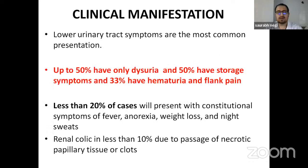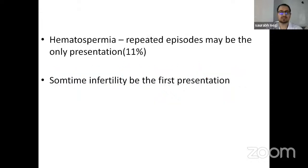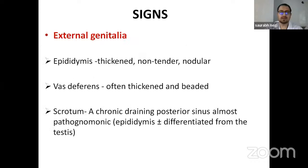In clinical manifestations, patients generally present with lower urinary tract symptoms. Up to 50% of cases have only dysuria, 50% have storage symptoms, and 33% have hematuria and flank pain. Less than 20% will present with constitutional symptoms like fever, anorexia, weight loss, and night sweats. Renal colic in less than 10% is due to passage of necrotic papillary tissue or clots. Hematospermia is present in 11% of cases, and sometimes infertility can be the only first presentation. On external examination, the epididymis is thickened, non-tender, and nodular; the vas can be thickened and beaded.